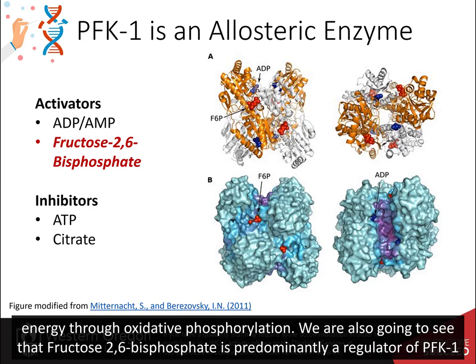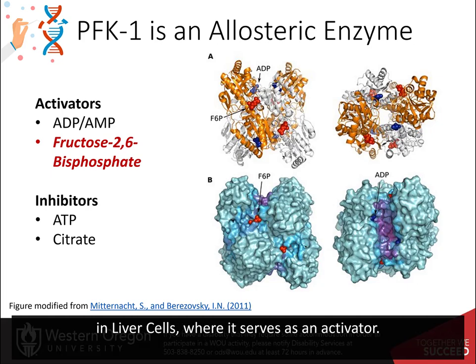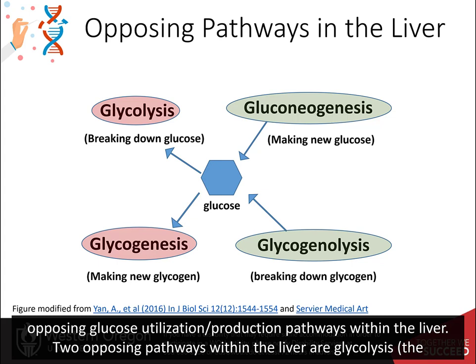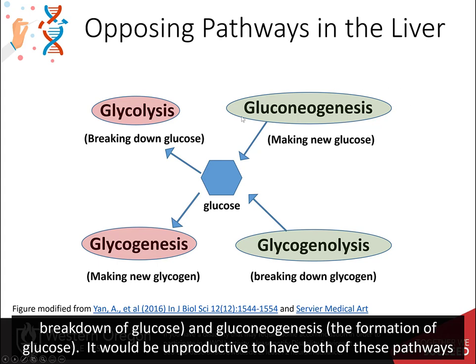We are going to see that fructose 2,6-bisphosphate is predominantly a regulator of PFK1 in liver cells, where it serves as an activator. But before we discuss the formation and use of fructose 2,6-bisphosphate and its role in the regulation of phosphofructokinase 1, let's review opposing glucose utilization and production pathways within the liver. Two opposing pathways within the liver are glycolysis, the breakdown of glucose, and gluconeogenesis, the formation of glucose.